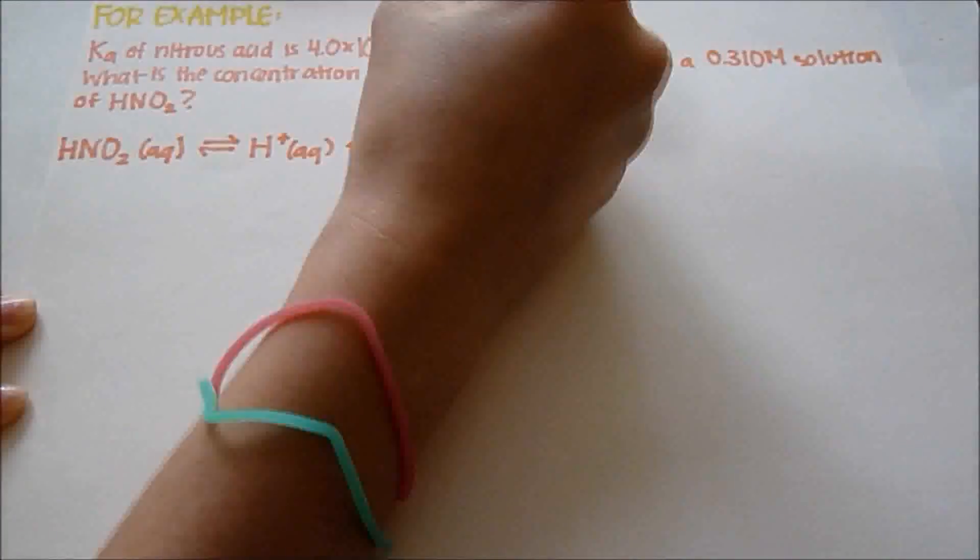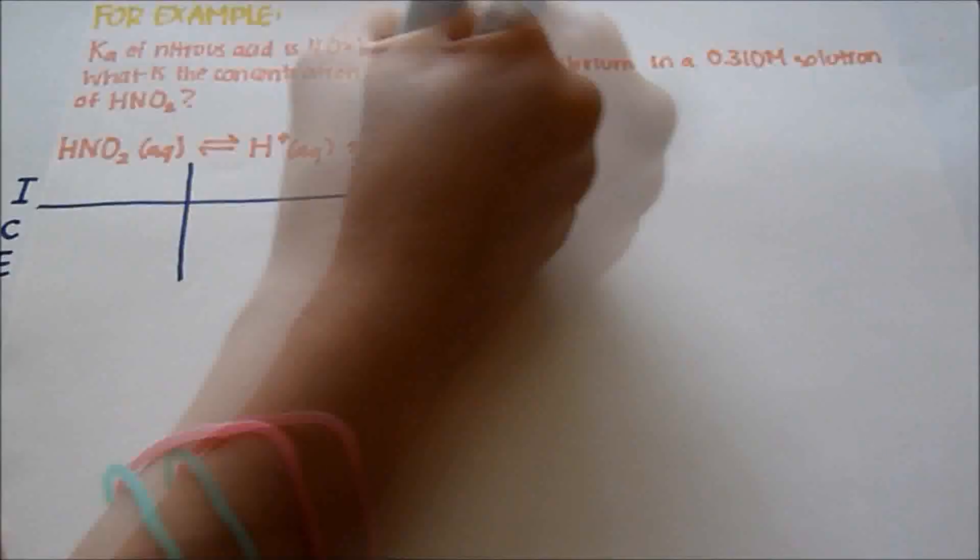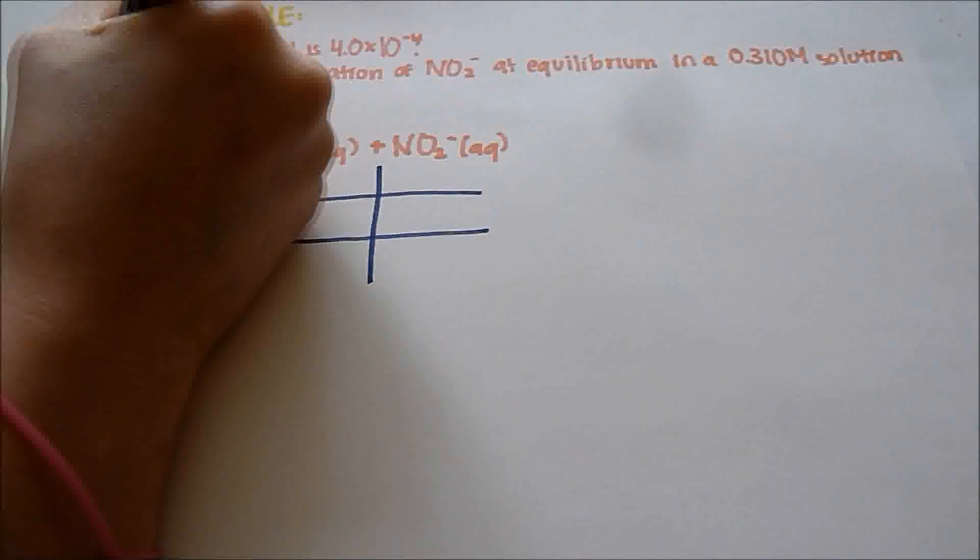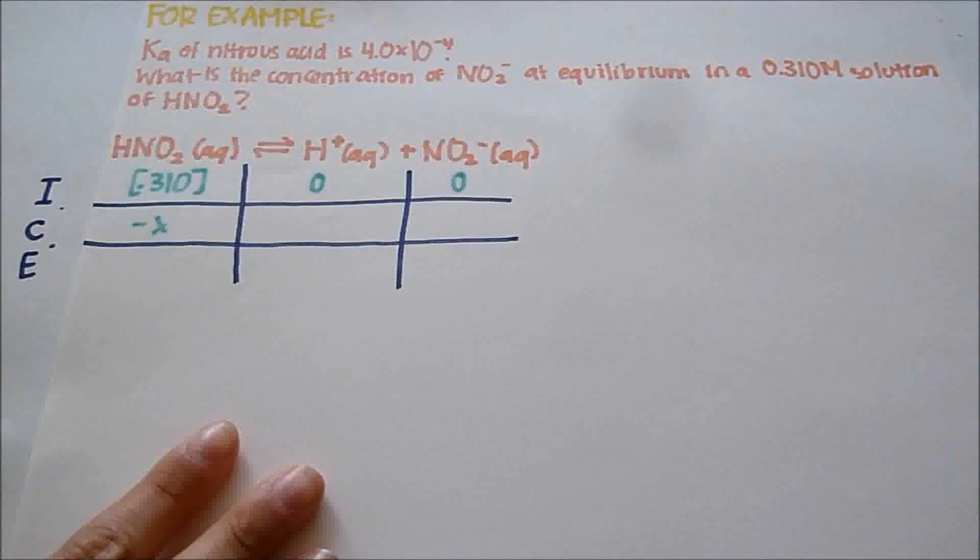So the first thing we need to do is we need to set up an icebox and put 0.310 for nitrous acid because that's what we're given. So for the initial, we're going to put zero for H+ and for NO2-.